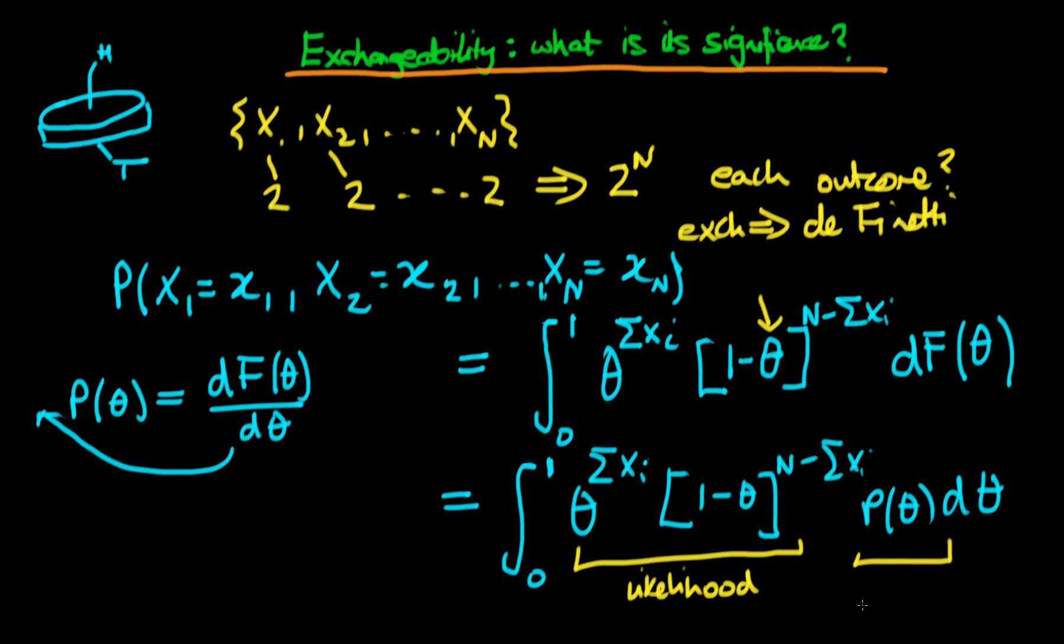Well, this is something which is data independent. Notice that there's no i subscript here, it's just a function of theta. So we could think about this as some sort of prior.